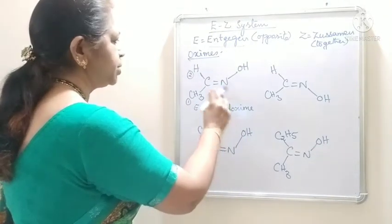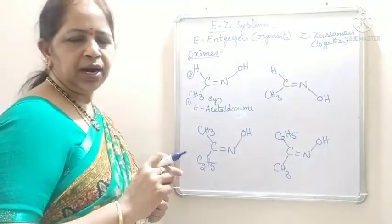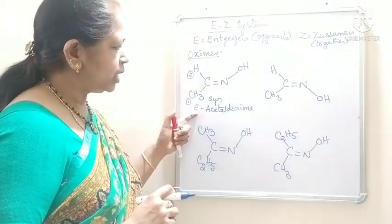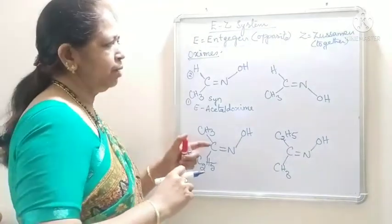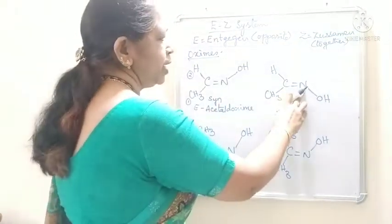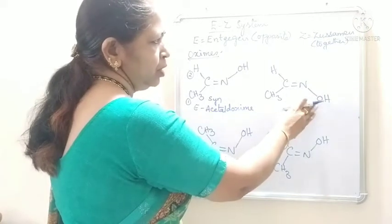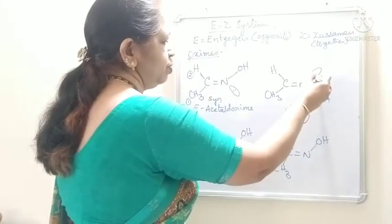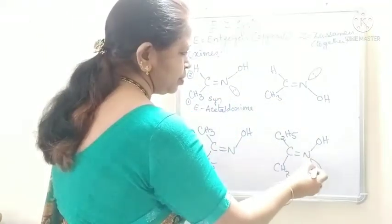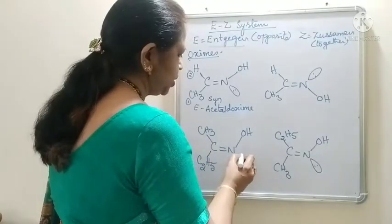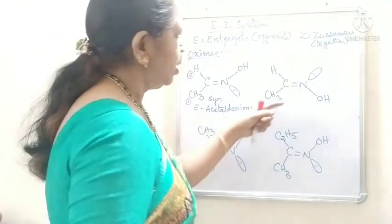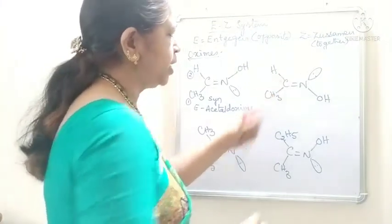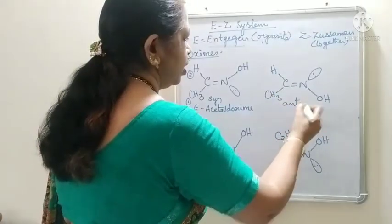Acetaldoxime — it is a syn compound. So, syn aldoxyimes have E configuration. Now coming to the next one: it is C=N but OH is coming down, and on the other side this nitrogen has a lone pair. We have to see the position of the OH group on the nitrogen. Here it is an anti-oxime — H and OH are lying on the opposite side. So it is an anti-oxime.